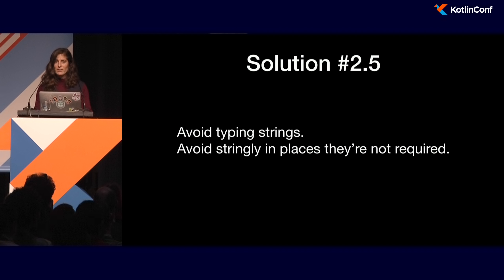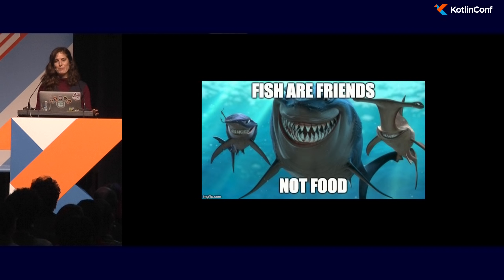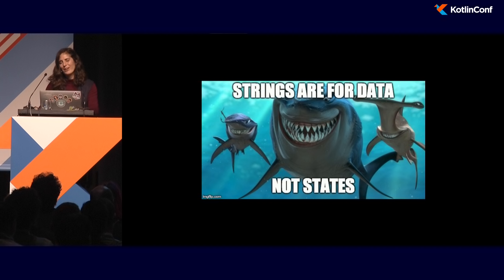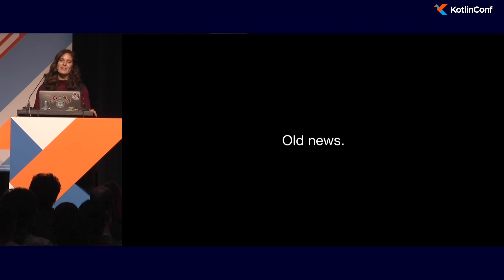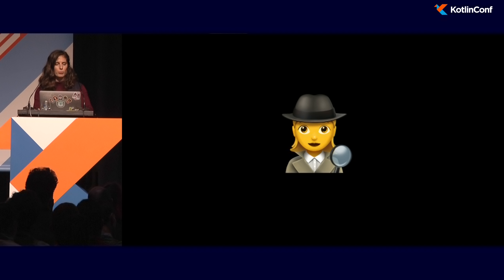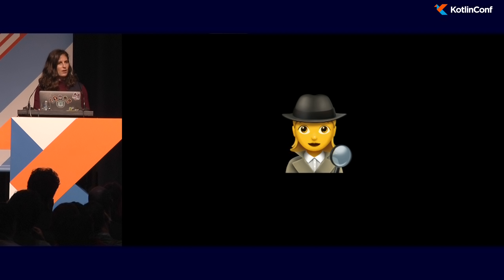So problem 2.5 is that strings are easy to mistype, and the answer is: avoid typing them. This is near and dear to my heart — 'Strings are for data, not states.' A lot of you are probably looking at my diatribe on strings and saying 'old news — we know strings can be dangerous, we know not to type them more than we have to.' But I wouldn't bore you with that unless I had an alternative point, which is that the way we treat strings and the knowledge we've accumulated around them is actually a far too narrow reading on the actual problem.